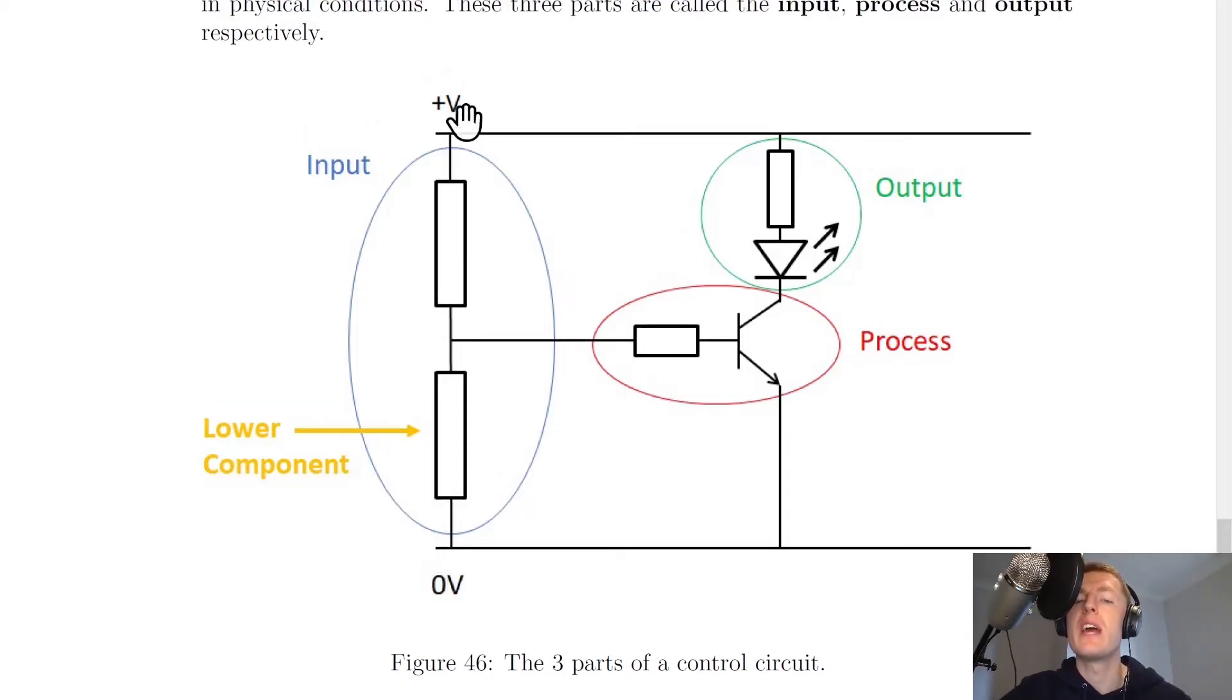We've got zero volts and Vs, so that is our potential difference, and we've got two components like two resistors in series here. If we ignored all this stuff on the right for now, all we've got here is a potential divider circuit. If we then ignore this and look at just the middle part...